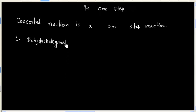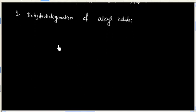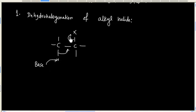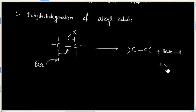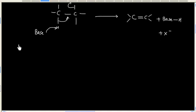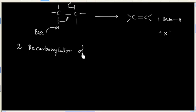One example is dehydrohalogenation of an alkyl halide. Another example we can have is decarboxylation of a beta-keto acid.